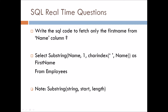We can make use of the SUBSTRING function to implement this requirement. The SUBSTRING function takes three arguments: first, the string — meaning the column we want to modify; then the starting position; and the length up to which we want to extract the string. So here we have: SELECT SUBSTRING(name, 1, CHARINDEX(' ', name)) AS first_name FROM employees. The CHARINDEX function provides the length up to the space, so we extract only the first name using an alias.